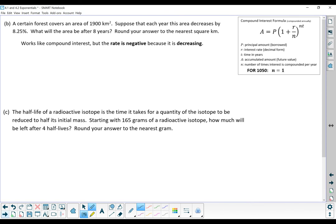Here's a scenario that's slightly different, but we can use the same formula. A certain forest covers an area of 1,900 square kilometers, that's our principal amount. Each year, the area is decreasing by 8.25%, so our R value here, because it's decreasing, is negative. And then it asks us what the area will be after eight years, so that's our T value. It works just like compound interest, but if it's decreasing, the rate will be negative. So our accumulated amount A is equal to that principal amount, 1 plus R, but the R is negative. So 1 minus 0.0825 to the power of 8 years.